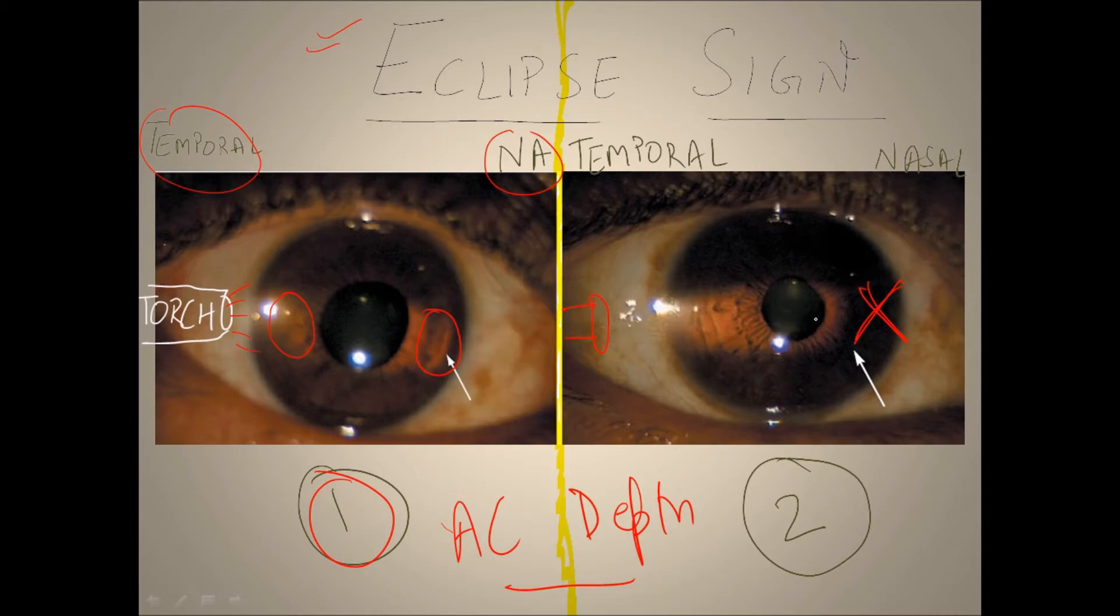For example, like we see in solar eclipse or lunar eclipse, the concept is the same here. This piece of iris or this part of the iris is obstructing the light, which cannot travel here.